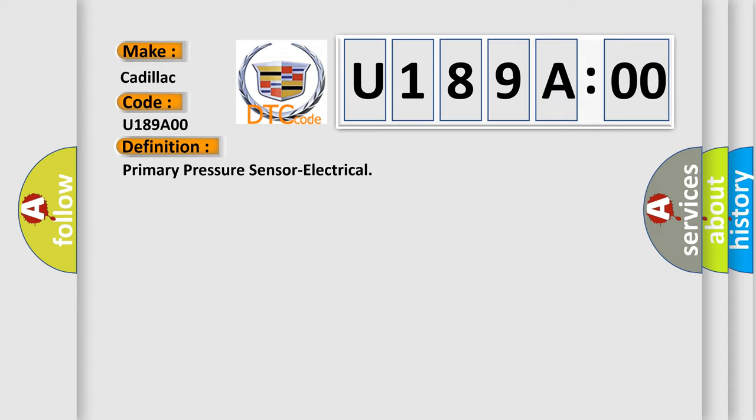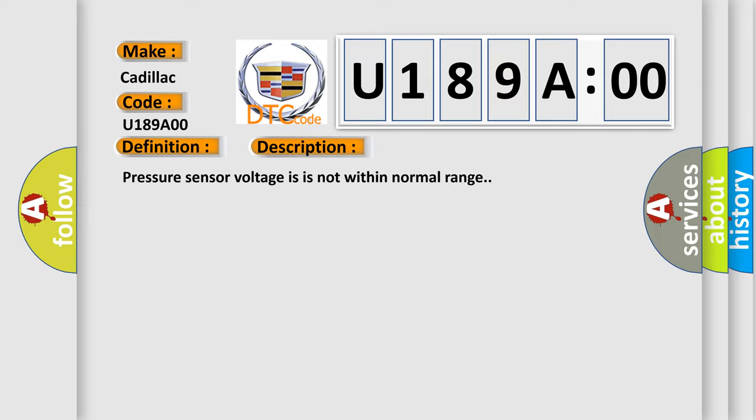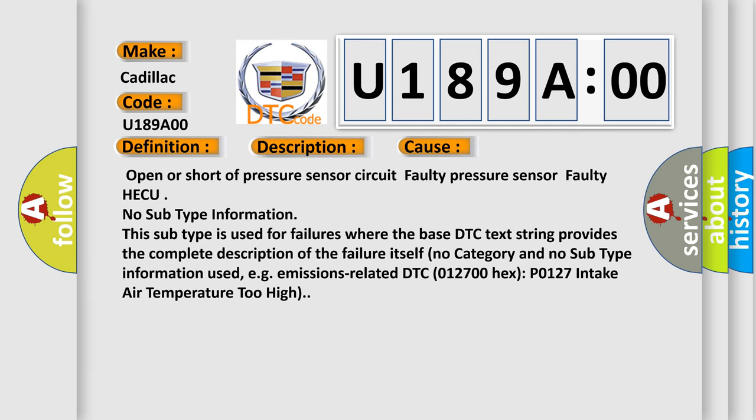And now this is a short description of this DTC code. Pressure sensor voltage is not within normal range. This diagnostic error occurs most often in these cases: open or short of pressure sensor circuit, faulty pressure sensor.